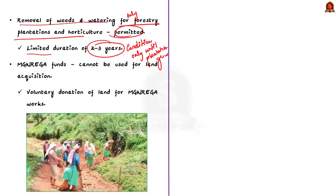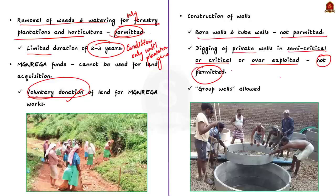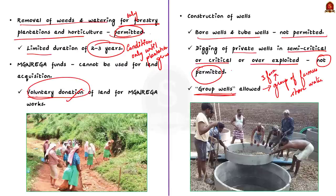MGNREGA funds cannot be used for land acquisition. If land is donated for MGNREGA works, the donation must be entirely voluntary and not under any pressure. Regarding wells: bore wells and tube wells construction are not permitted under MGNREGA. Digging of private wells in semi-critical, critical or over-exploited areas is also not permissible — in these areas, only group wells will be allowed. A group well is where a group of at least three farmers agree to share water from a well.